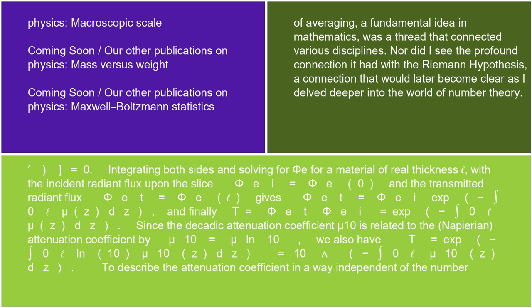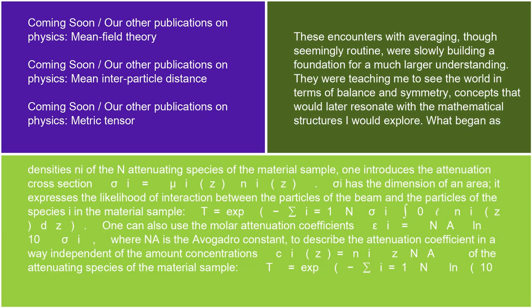Since the Decadic attenuation coefficient μ₁₀ is related to the Napierian attenuation coefficient by μ₁₀ = μ/ln(10), we also have T = exp(−∫₀ℓ ln(10)·μ₁₀(z)dz) = 10^(−∫₀ℓ μ₁₀(z)dz). To describe the attenuation coefficient in a way independent of the number densities nᵢ of the n attenuating species of the material sample, one introduces the attenuation cross-section σᵢ = μᵢ(z)/nᵢ(z). σᵢ has the dimension of an area.